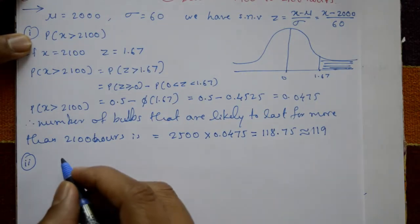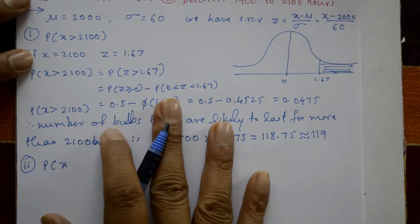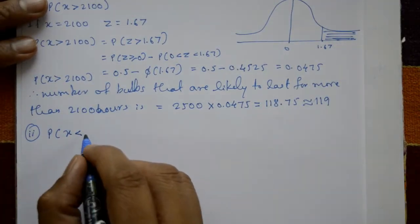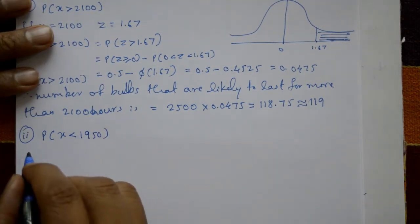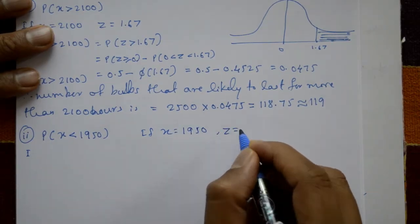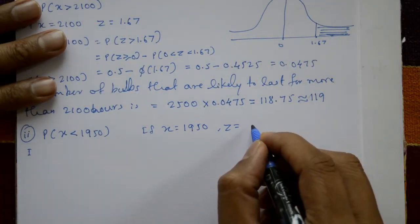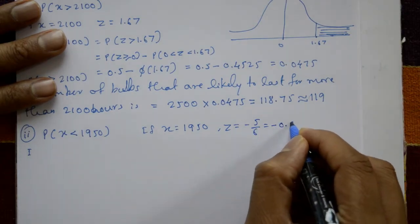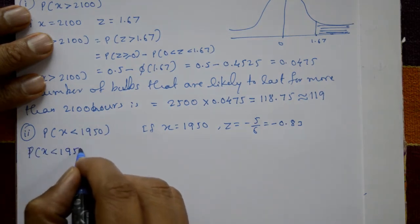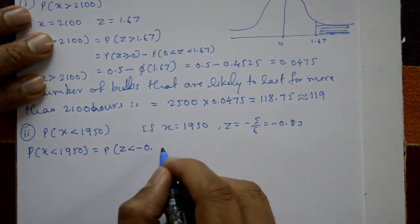Case 2: less than 1950 hours. We find probability of x less than 1950. Taking x = 1950, z = (1950 - 2000) / 60 = -50/60 = -5/6, which equals approximately -0.83. So we find probability of x less than 1950, which equals probability of z less than -0.83.